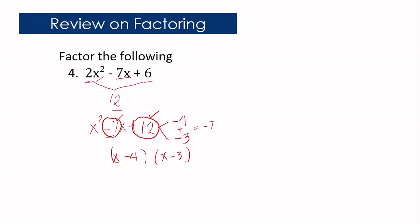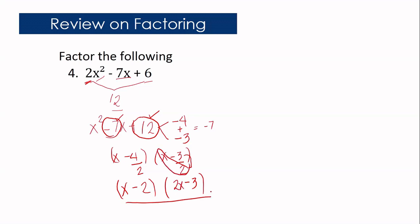But since originally the value of a is 2, you are going to divide both factors by 2. If we simplify, x minus 4 divided by 2 gives x minus 2. For the other factor, 3 and 2 are not divisible, so you write minus 3 and then multiply to get 2x. So the final factors are x minus 2 and 2x minus 3.